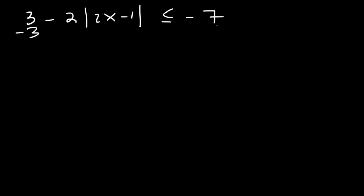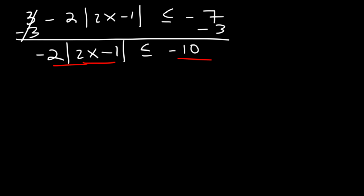So first let's subtract both sides by 3. So what we're gonna have is negative 2 times the absolute value of 2x minus 1 is less than or equal to negative 10. Next let's divide both sides by negative 2. So this will change the direction of the inequality. Just keep that in mind. So the absolute value of 2x minus 1 is equal to or greater than positive 5.